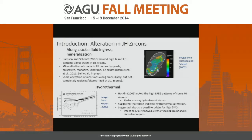Many of the cracks in Jack Hills zircons are mineralized by quartz, muscovite, various phosphates, and iron oxides. We've also been looking at other inclusions in Jack Hills zircons; those that intersect cracks are interestingly shifted in mineralogy compared to the population not intersecting cracks, probably indicative of partial alteration of that population.